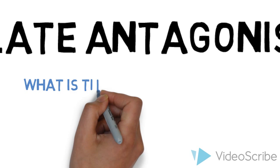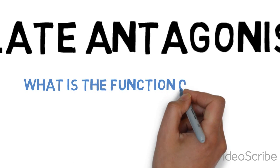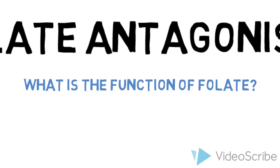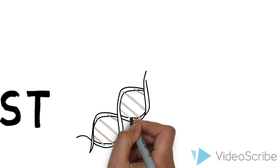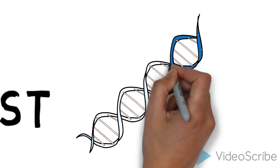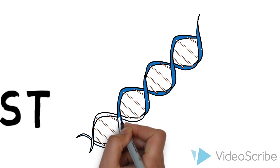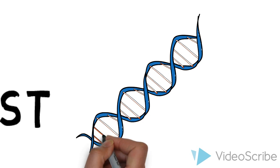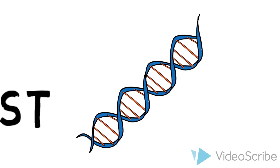To understand how methotrexate works, we need to understand what folate does. Folate is essential for the synthesis of purine nucleotides and thymidylate, which are needed for DNA synthesis and cell division. These are both important components of tumour growth.